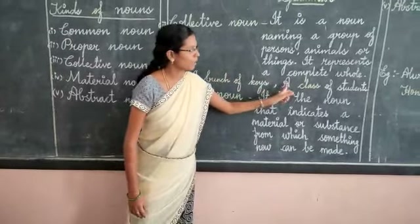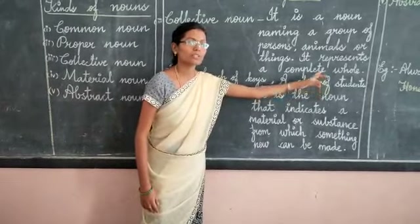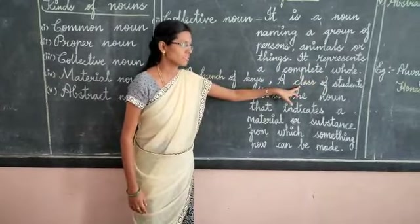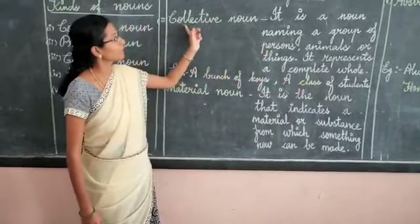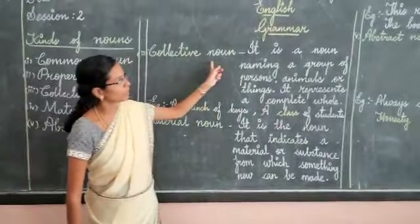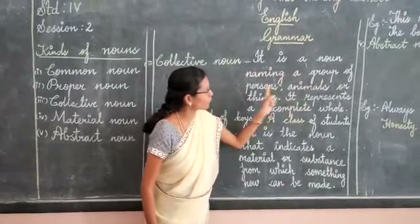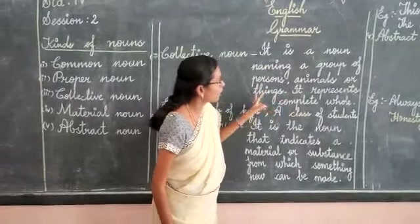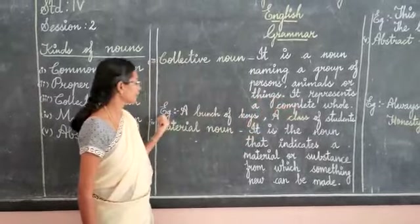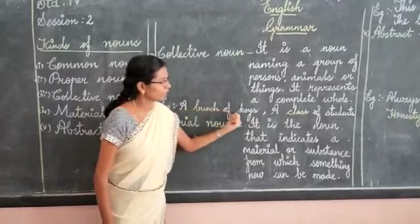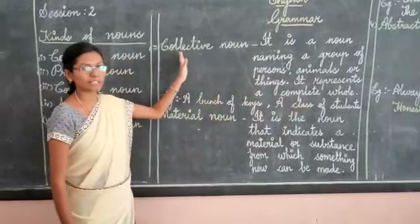One more example: a class of students. Here 'students' is the noun, and the collective noun is 'class' — the colored word. So to summarize: collective noun is a noun naming a group of persons, animals or things. It represents a complete whole. Examples: a bunch of keys, a class of students.